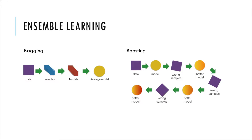For ensemble learning, it can be divided into two techniques. The first is called bagging. The data can be divided into several buckets, called sample buckets, and for each sample bucket we train them using a simple machine learning algorithm with the models, and after that we calculate an average model for it. That's one technique.